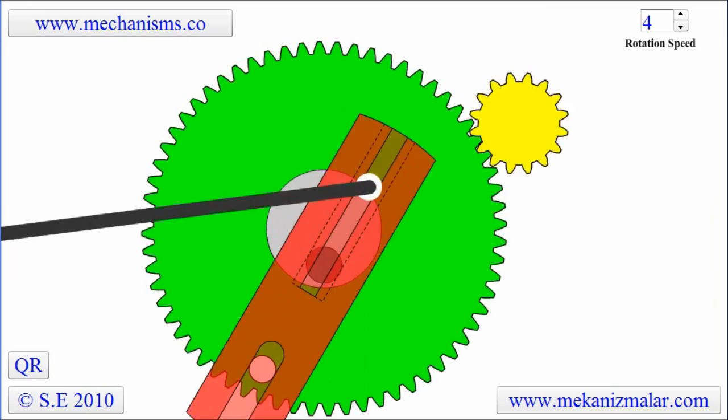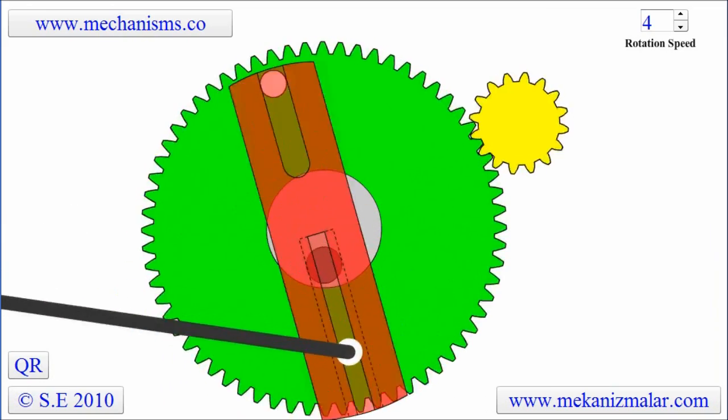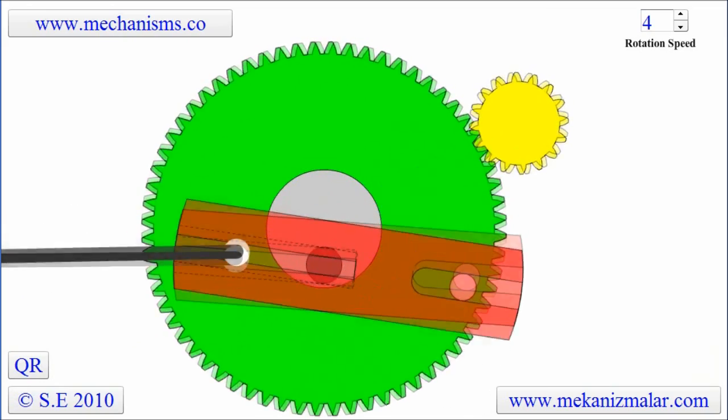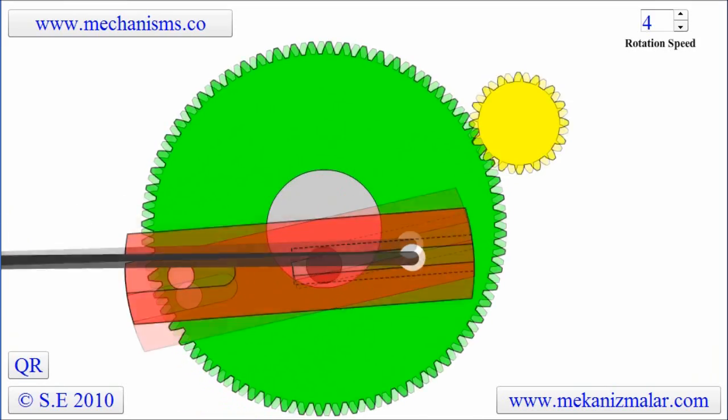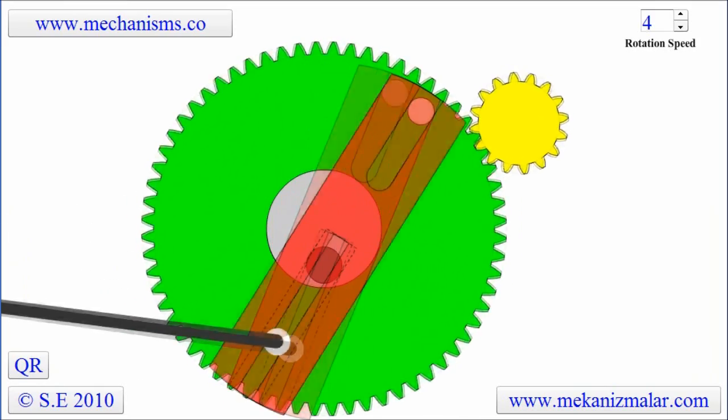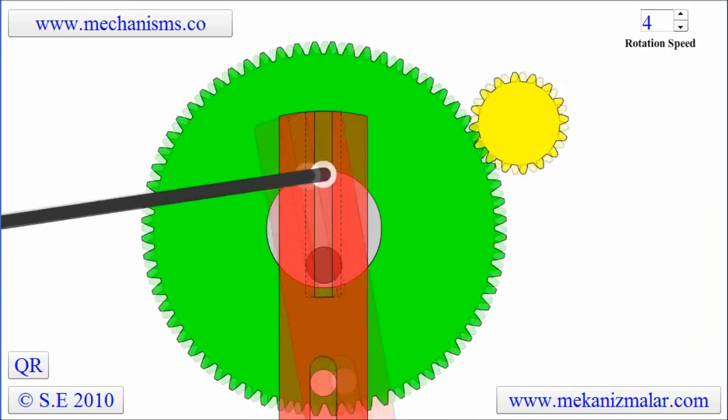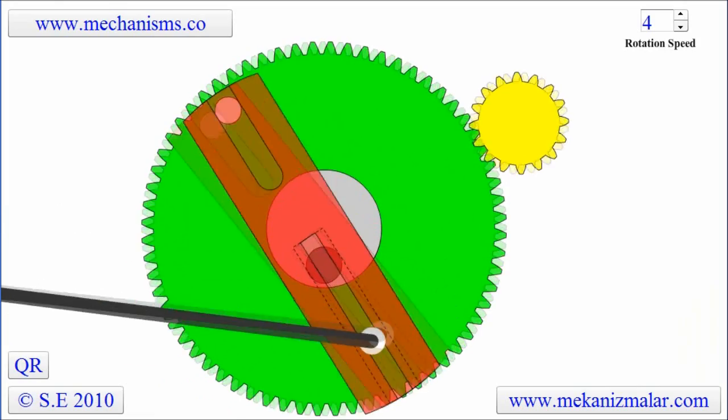In this video, we're going to describe the working principles of a Whitworth quick return mechanism. A Whitworth quick return mechanism is a device which converts a rotational motion to a reciprocation motion.